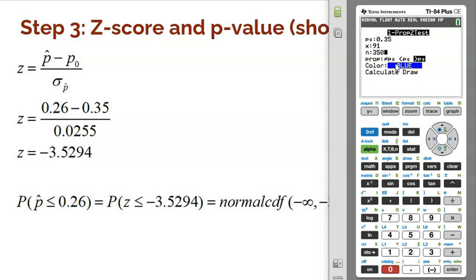Now, the next part is really important. What is the alternative? We want to show that our proportion, the true proportion, they could call PROP, is less than the null. So we want to go down here and select less than.